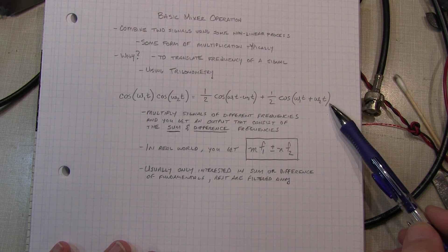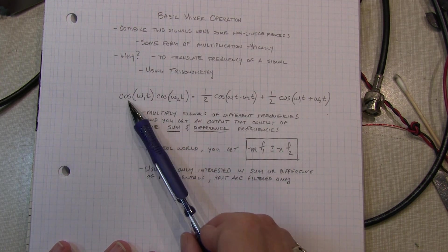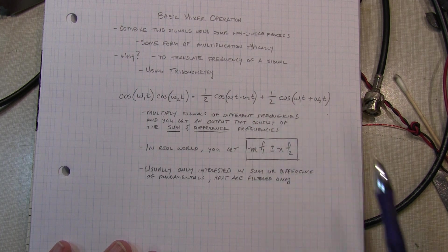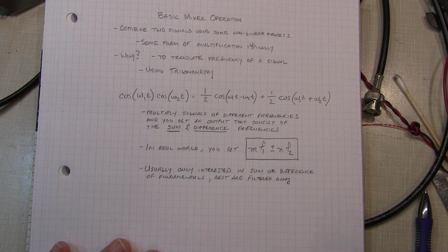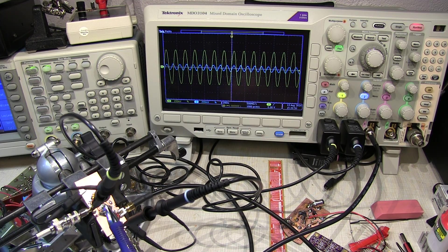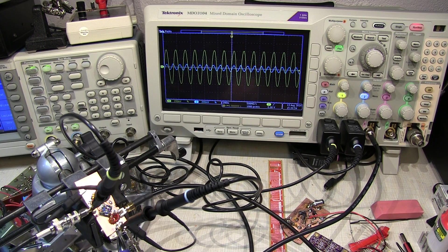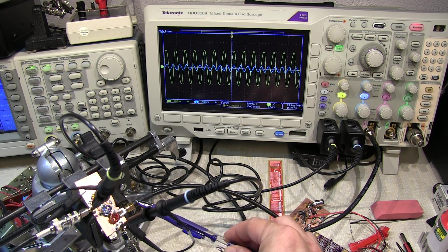Now from the math you really can't visualize what's going on. So let's go take a look at the scope and see how multiplying these signals together gives you signals at these other frequencies. Alright we've got our mixer mounted up here in the vice. Got some probes looking at the local oscillator input, the LO input, and the RF input. And I've got the IF input coming out here as well. So that'll go right into the scope also.